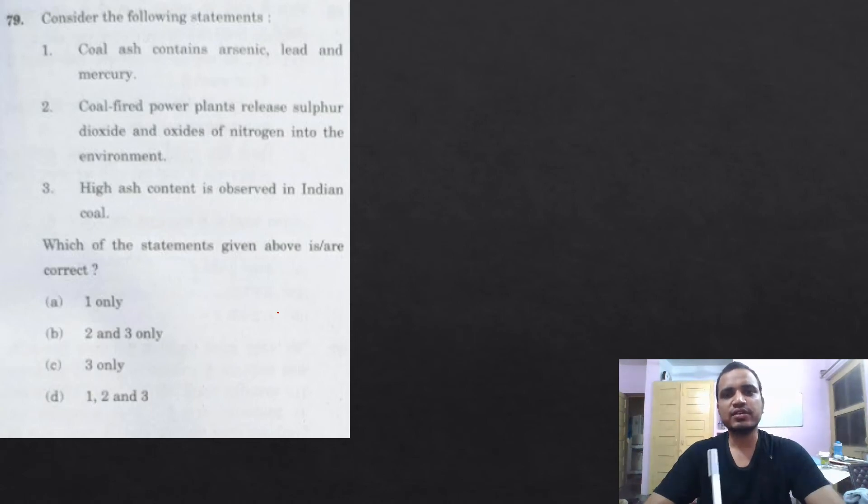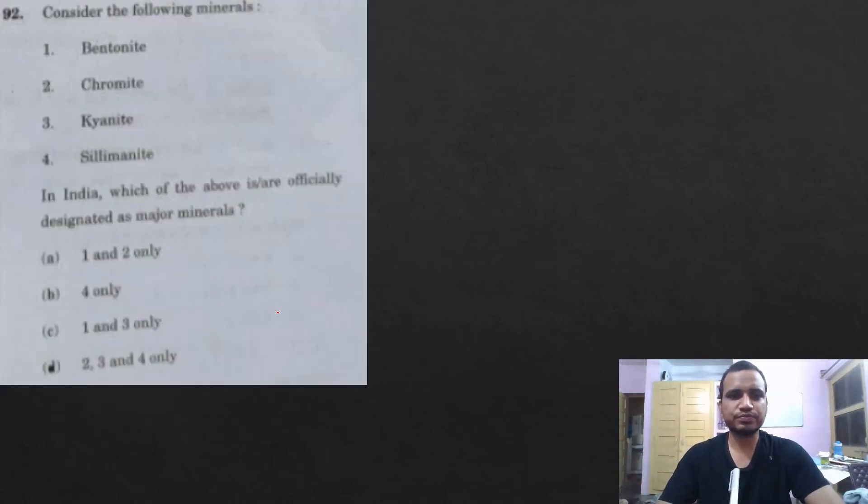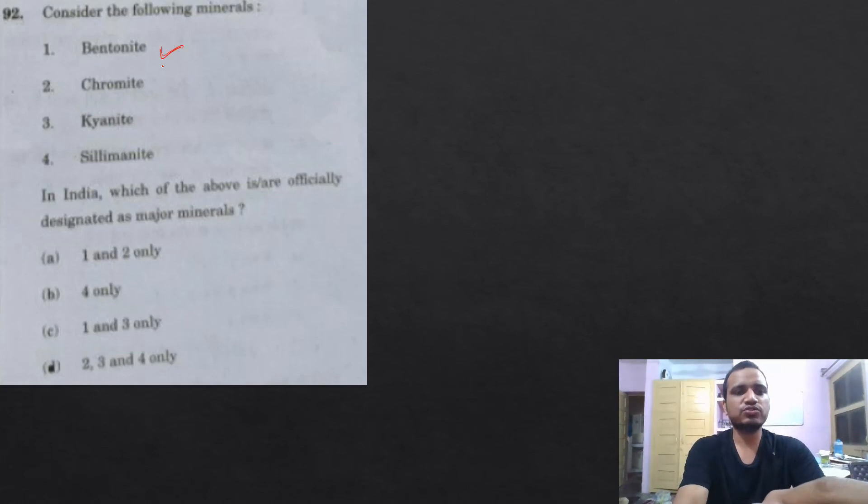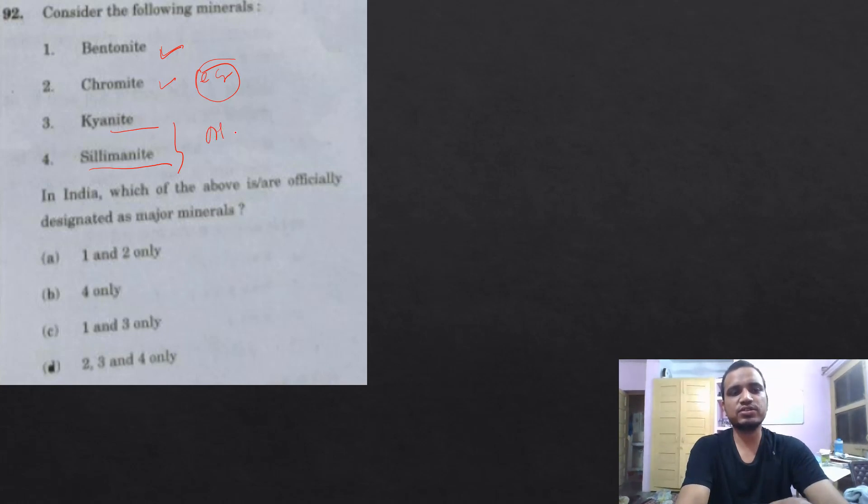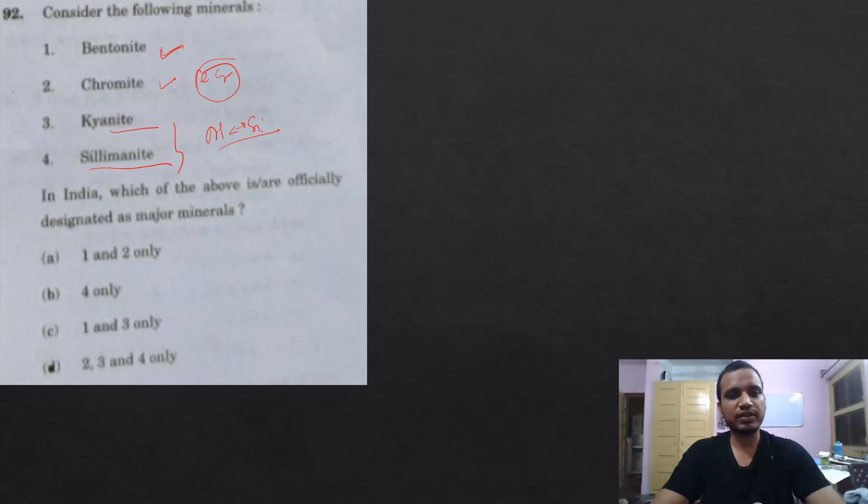Let's see, consider the following minerals: bentonite, chromite, kyanite, selimanite. In India, which of the above are officially designated as major minerals? Okay, so this is a very specific type of question. We have not read this thing, but yeah, I can tell you what are the different types of ores of this. So bentonite, chromite - you know chromite is your ore of iron-chrome. Then kyanite and selimanite - these two are ores of aluminum silica alloy, mineral of aluminum and silica. So among this, the fourth one is declared as the major mineral.